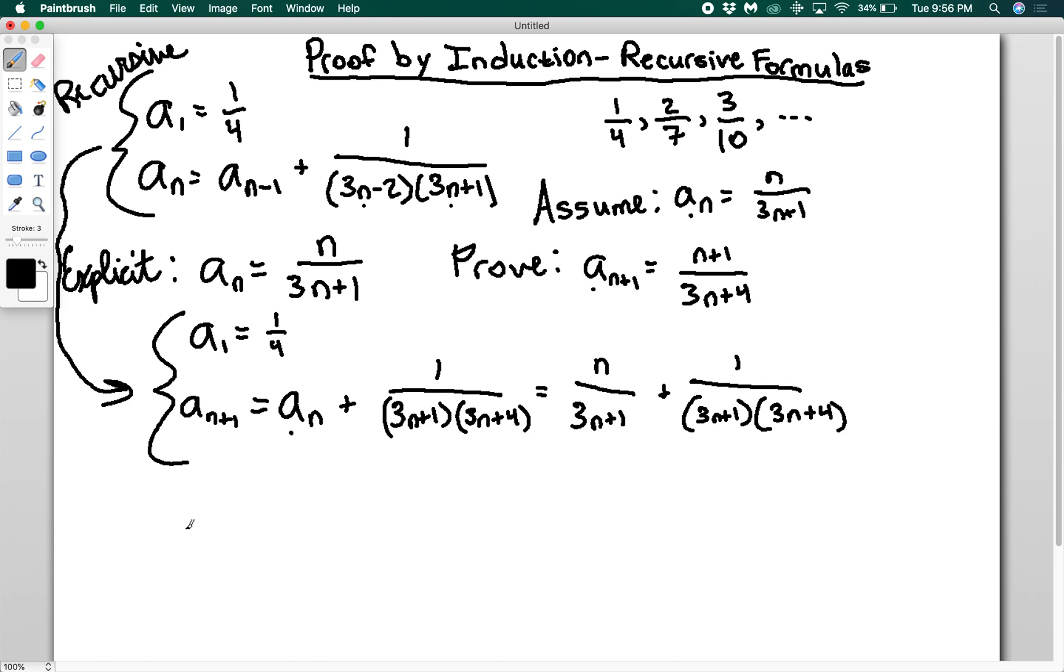Let's get a common denominator. I'm going to multiply the top and bottom of the left side by 3n+4. So I have n(3n+4) plus 1, divided by (3n+1)(3n+4).